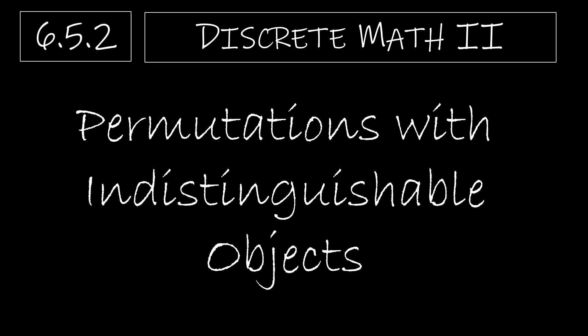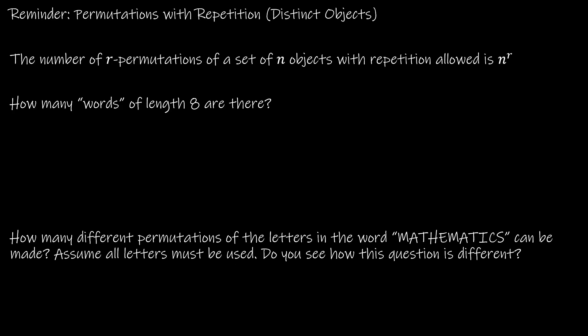This is section 6.5. Our second topic is permutations with indistinguishable objects. Quick reminder about permutations with repetition for distinct objects: R permutations of a set of N objects is N to the R. So how many words of length 8 are there? Well, there are 26 distinct letters and we are choosing a length of 8, so it would be 26 to the 8th.